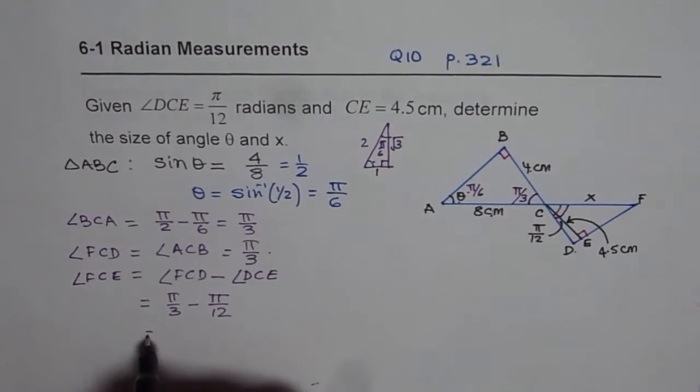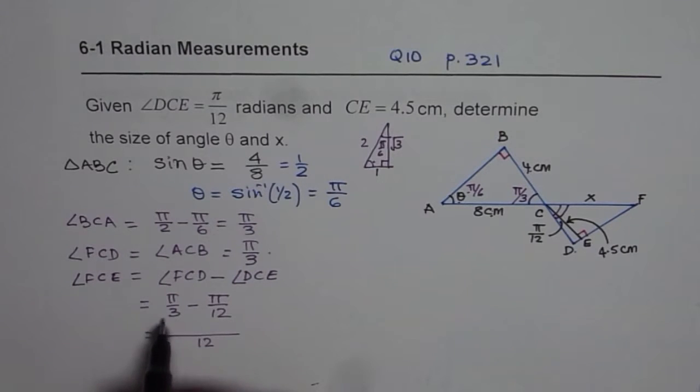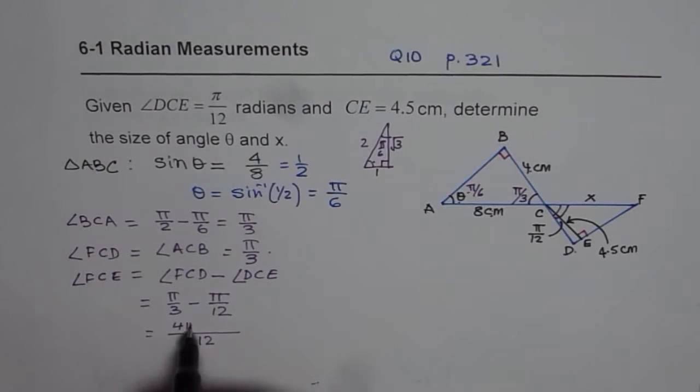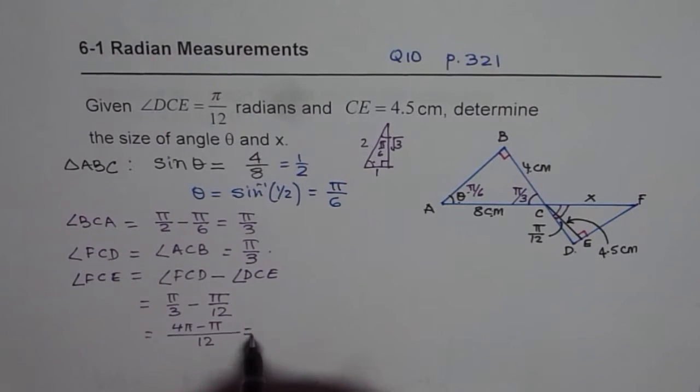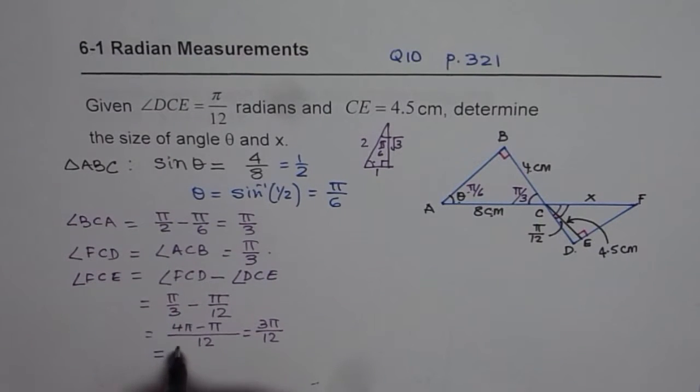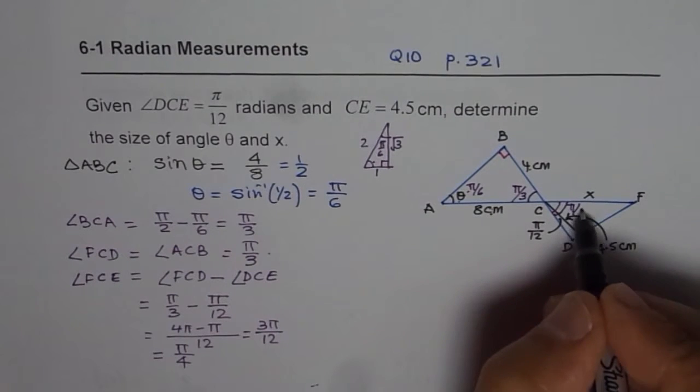Now you can take common denominator of 12. Multiply this by 4 to make it 12. So 4π minus π, so that gives you 3π/12, which is indeed equal to π/4. So this angle is π/4 for us.